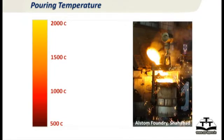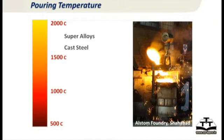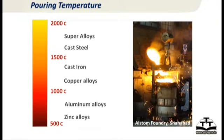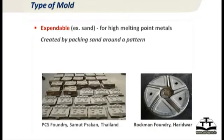Anything which can be melted can be cast. We have all the way from super alloys — titanium-based alloys, nickel-based alloys — at almost 1500 to 1700 degrees, touching 2000 degrees, to mostly irons and copper alloys above 1000 degrees, and below 1000 degrees you have aluminum and zinc alloys and so on. This is a wide range of metals that can be melted and cast.